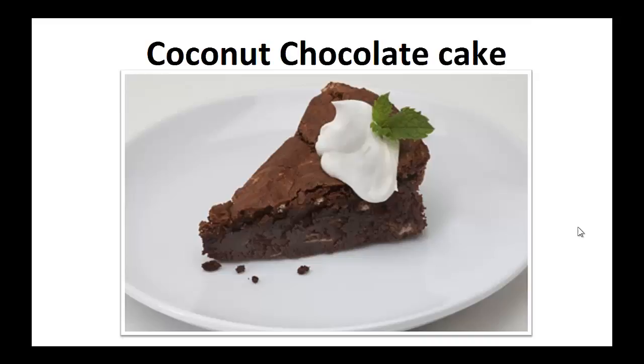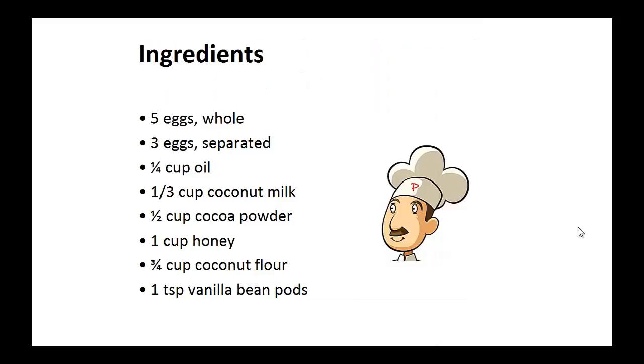Coconut chocolate cake. Ingredients: five whole eggs, three eggs separated, one quarter cup of oil, one third cup of coconut milk, half cup of cocoa powder, one cup of honey, three quarter cup of coconut flour, and one teaspoon of vanilla bean pods.